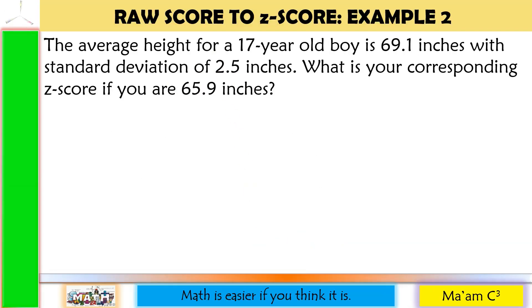Example number two. The average height for a 17-year-old boy is 69.1 inches, with a standard deviation of 2.5 inches. What is your corresponding Z-score if you are 65.9 inches? Again, let us identify first the given.